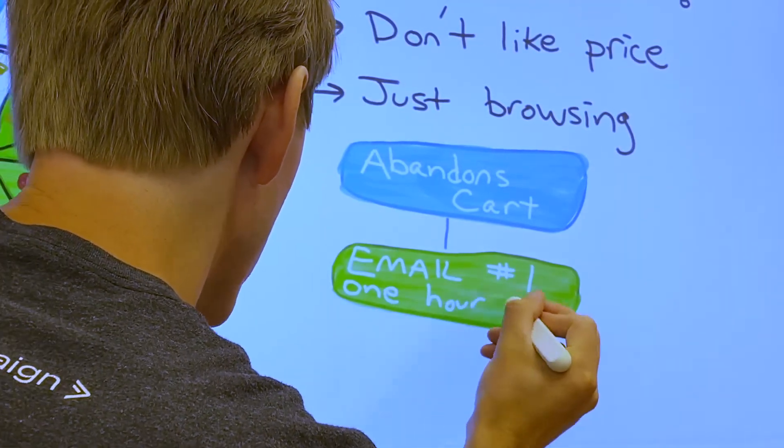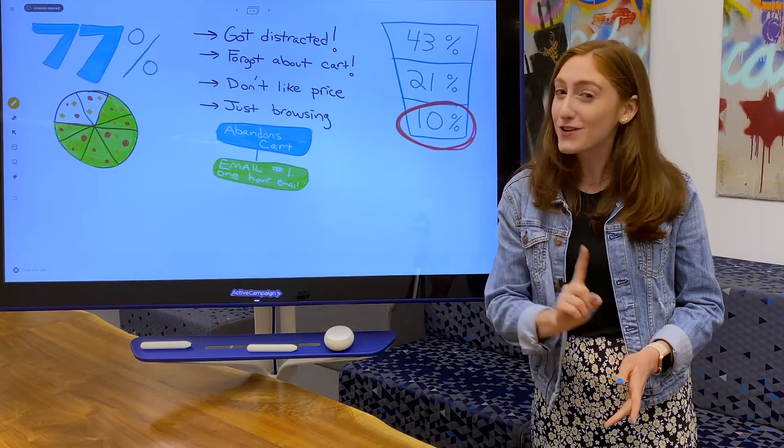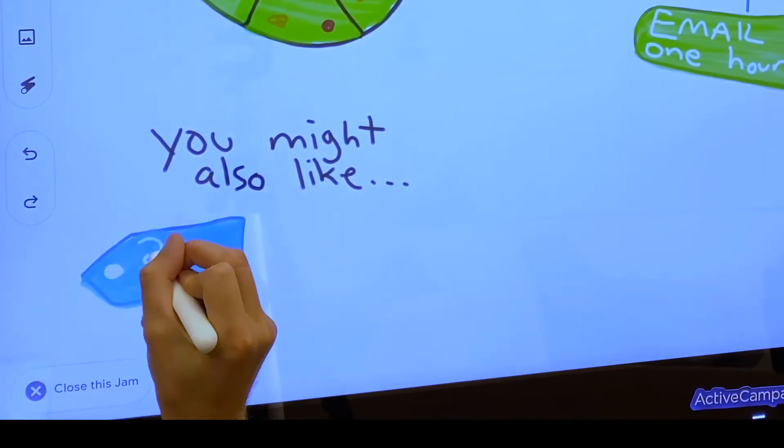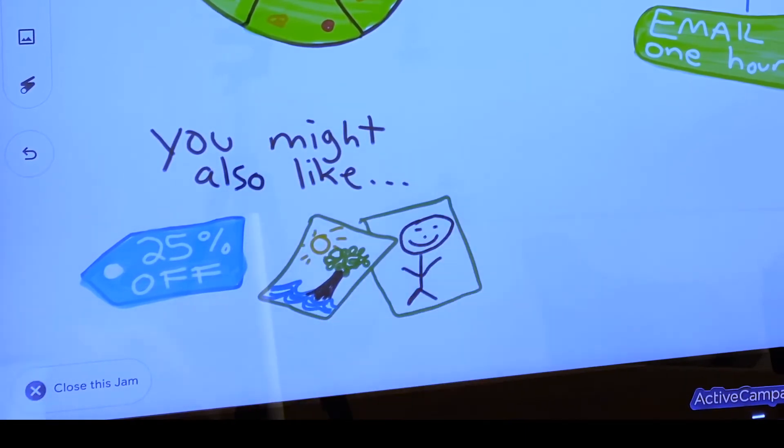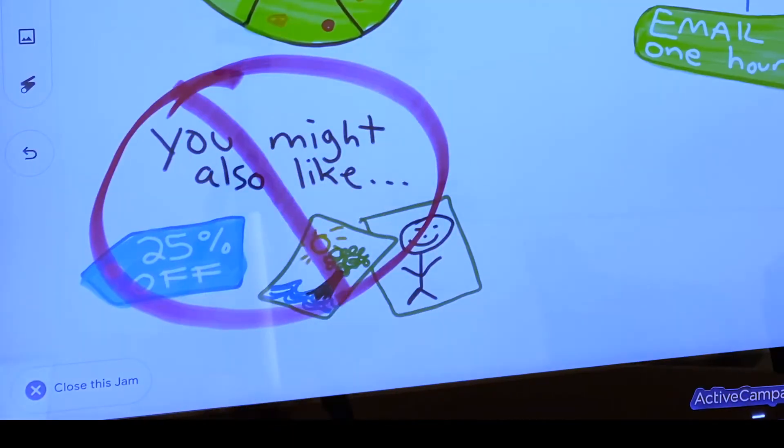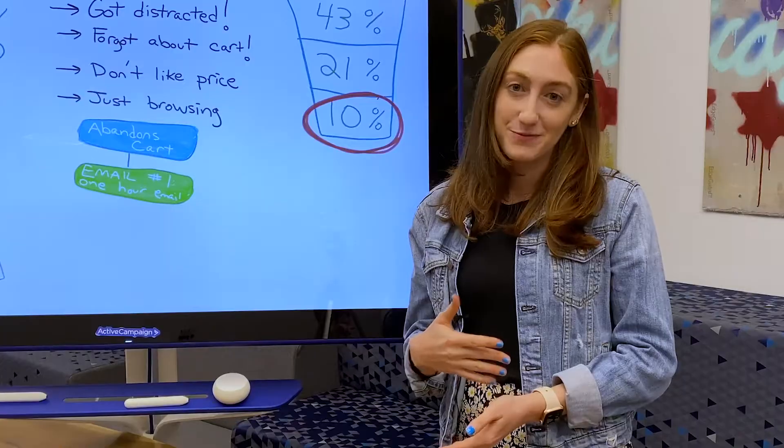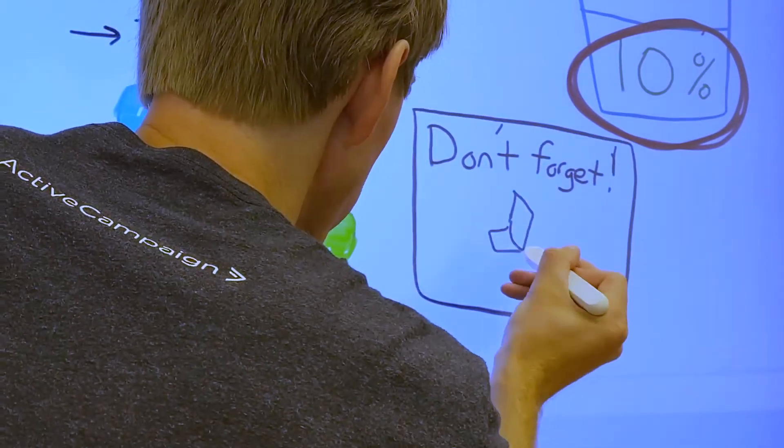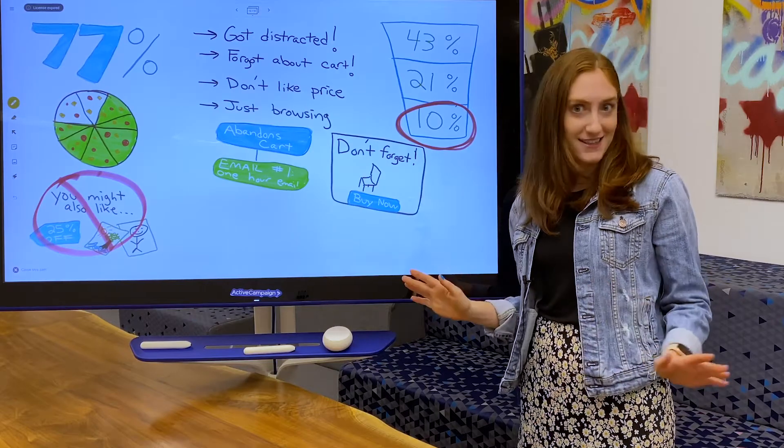Starting with email number one, the one-hour email. The one-hour email is your first line of defense once the cart has been abandoned. In this first email, there's really no need to get fancy. It's tempting to throw in related products, coupons, or jazzy images. But because this is a series of emails, we'll have time for all of that stuff later. Right now, we just have to remind them of what they're missing. Include a simple reminder, an image of your product, and a single call to action, and that's it.